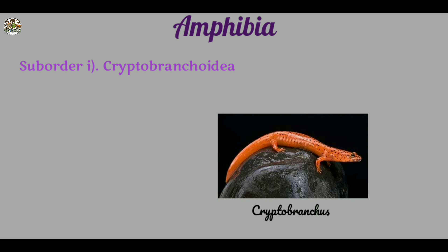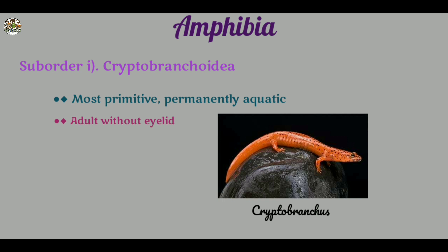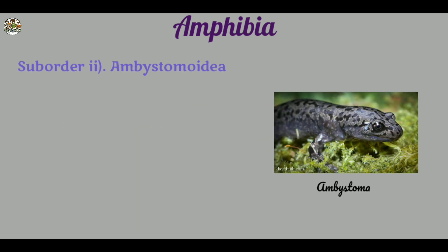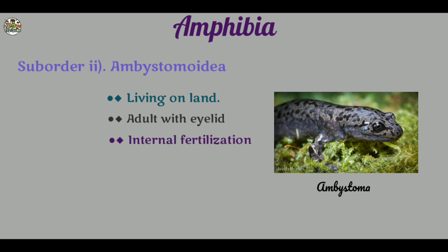Sub-order one: Cryptobranchoidea. They are the most primitive and permanently aquatic. Adults are without eyelids. External fertilization occurs. For example, Cryptobranchoidea. Sub-order two: Ambystomatoidea. They are mostly living on land. Adults have eyelids, and internal fertilization occurs. For example, Ambystoma.